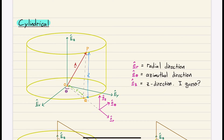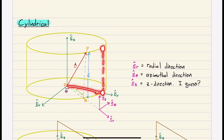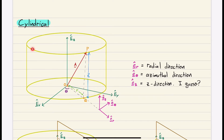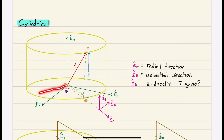ER points from the origin — the center of our cylinder — out to point Q. If point P is at some location, Q would be the corresponding point below it on the base circle, and ER points in that direction. Here's another example: Q would be right here, and ER would be pointing towards point Q.